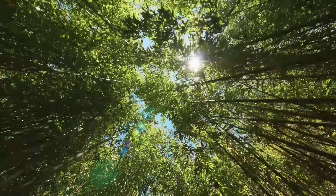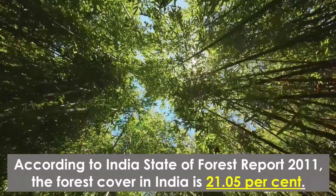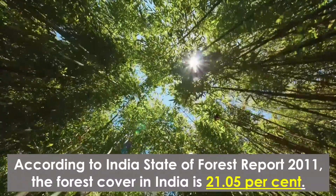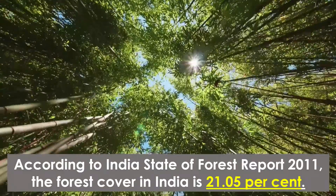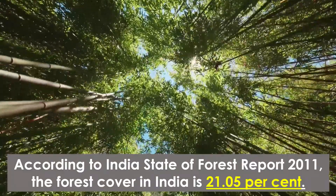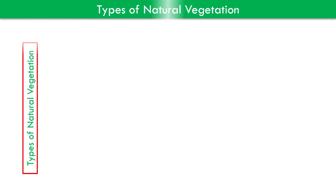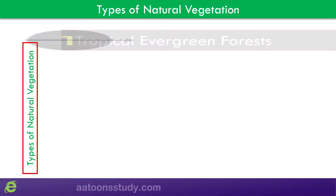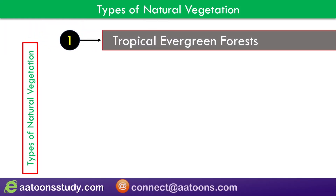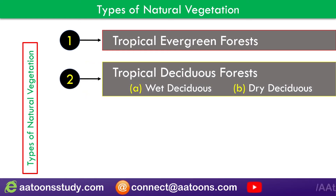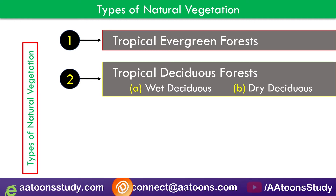According to the Indian State of Forest Report 2011, the forest cover in India is about 21.05 percent. There are five different types of natural vegetation: tropical evergreen forests, tropical deciduous forests — further classified into moist deciduous and dry deciduous forests.